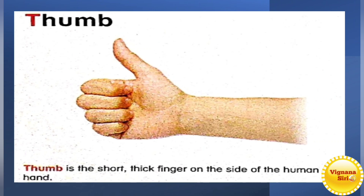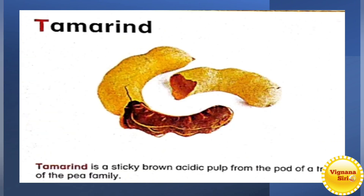T for thumb. Thumb means — he is showing, right? That finger is called thumb. It is a short, thick finger on the side of the human hand. Maybe you remember the thumbs up — it is nothing but we are opening the thumb.